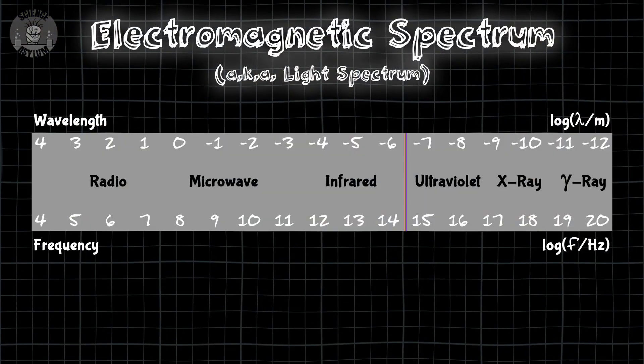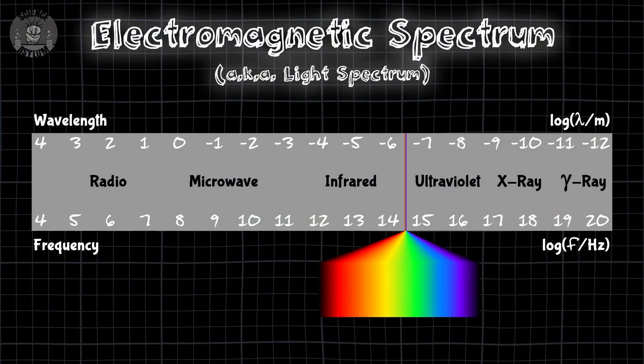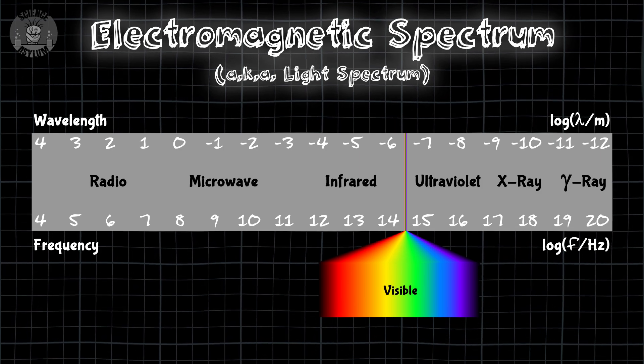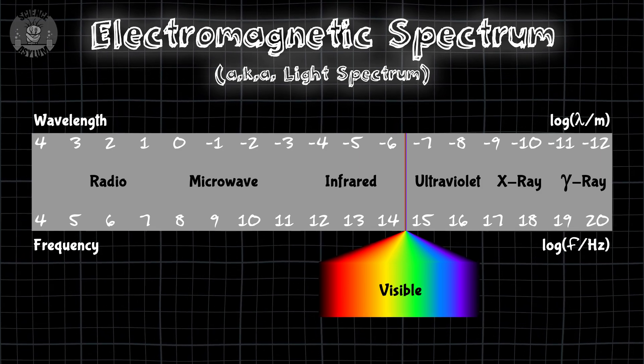The only type of light we can see is this little tiny sliver right here, which we call visible light for obvious reasons. We see almost none of the light in the universe, but we do see enough to function on a daily basis.